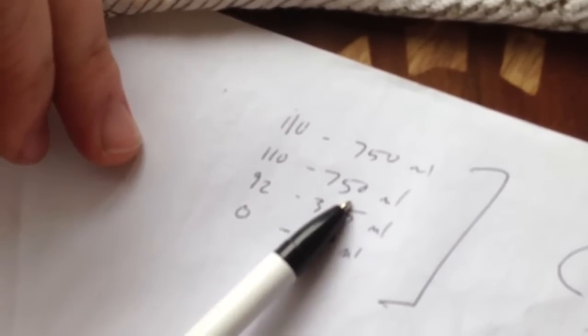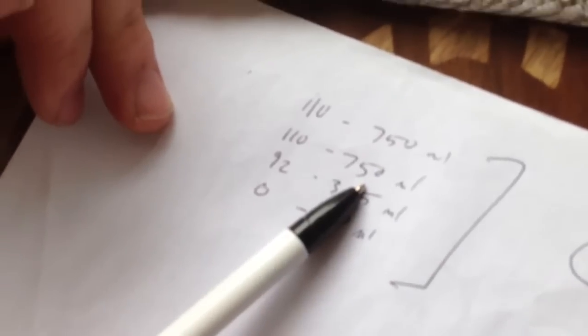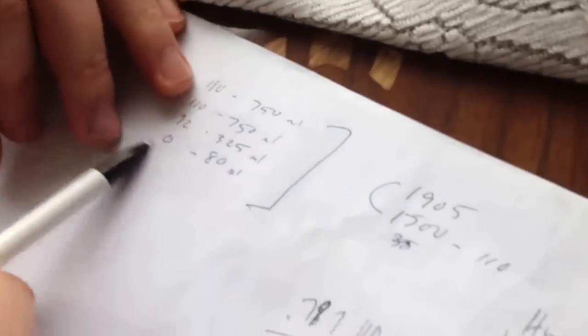Right now we've got two 750ml bottles of 110 proof, and then we've put about 325ml, half of that bottle, at 92 proof, and then we've put about 80ml, which is 3 ounces, at zero proof.